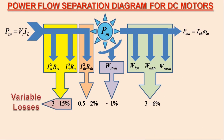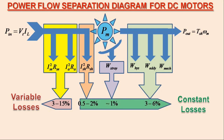On the other hand, the shunt field winding copper loss, hysteresis loss, eddy current loss and mechanical losses together are called the constant losses in the DC motor.